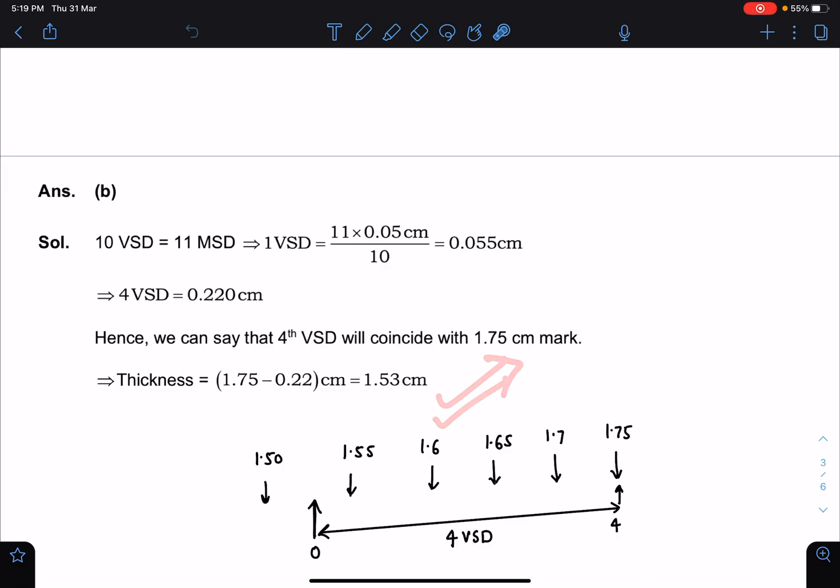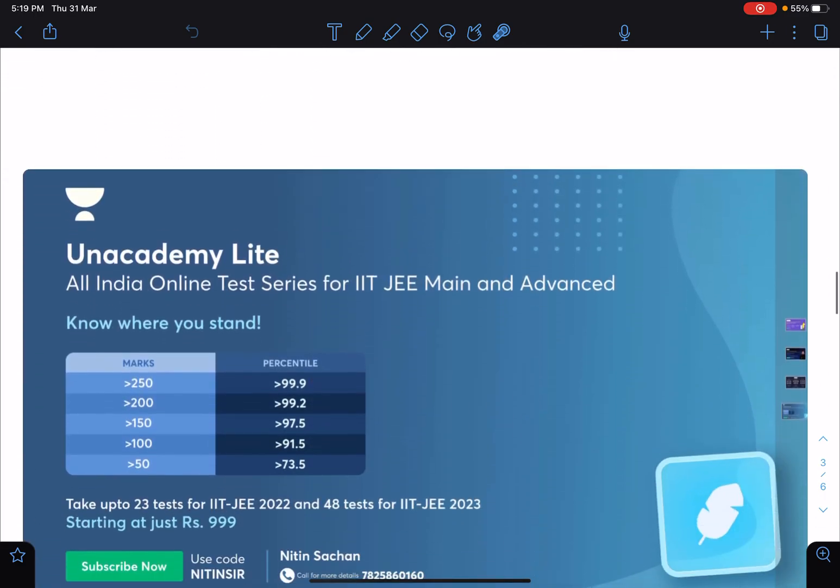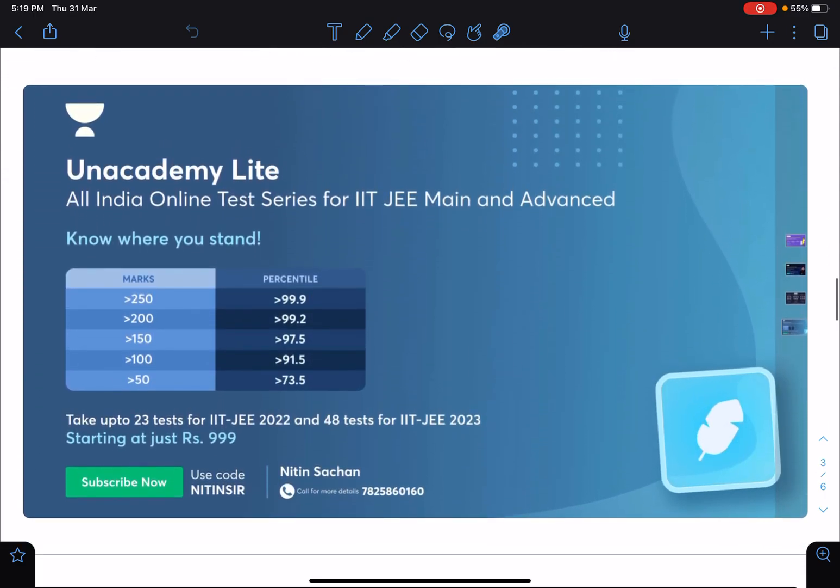And guys, this is about Unacademy Lite. It is the test series of JEE 2022, and 48 tests are there for 2023. So you can just, and it's a very reasonable enterprise, so you can use my code Nitin Sir. And if you want to know more about this, you can call on this number also.